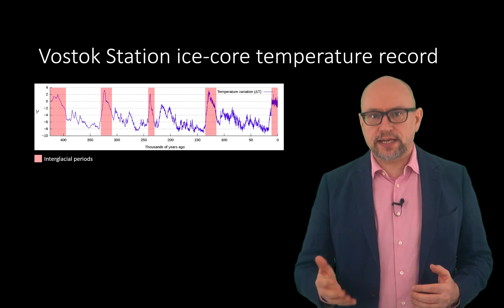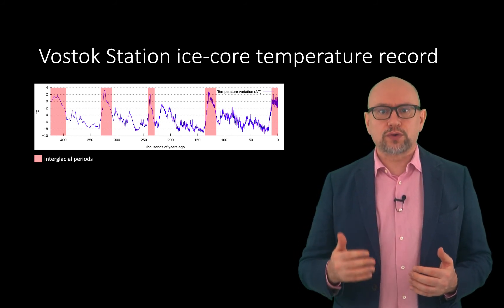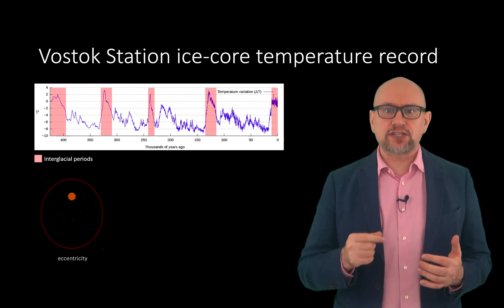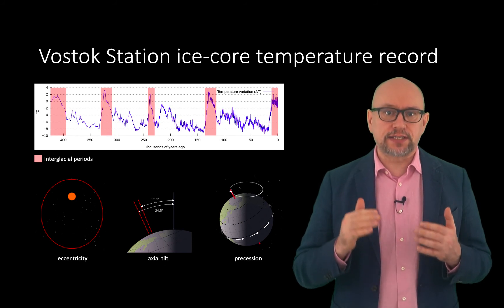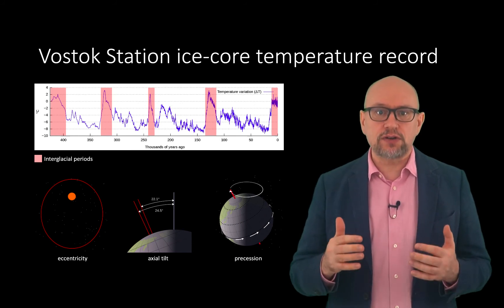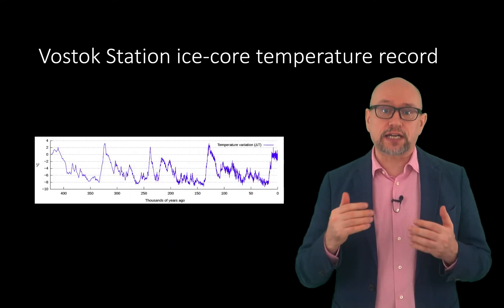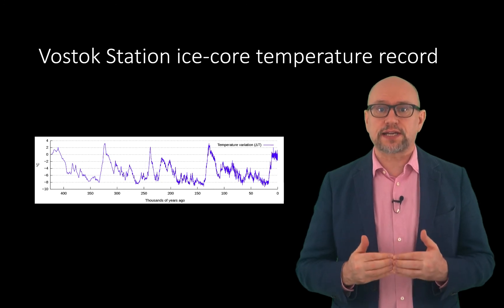The glacial-interglacial cycles revealed in the ice core temperature record are caused by Milanković cycles, that is the variations in eccentricity, axial tilt, and precession that result in cyclical variations in the solar radiation reaching the Earth's system. This figure shows that current temperatures have certainly not been witnessed in the last 100,000 years.